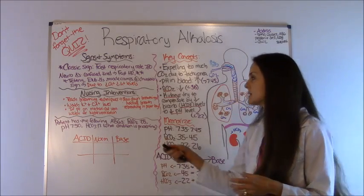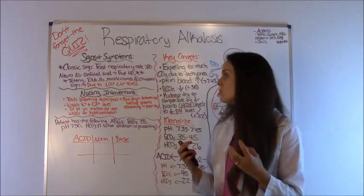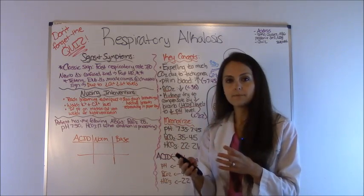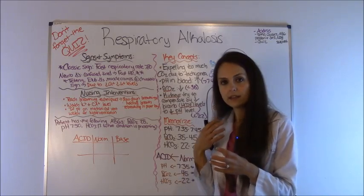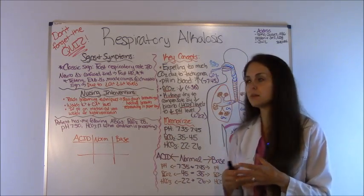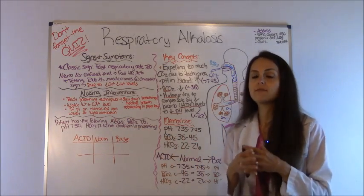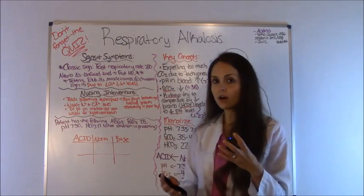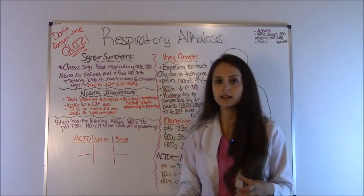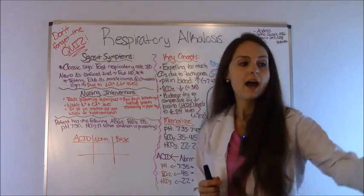For nursing interventions, you want to teach the patient breathing techniques — if they're having an anxiety attack, have them slow their breathing down, hold their breath, or rebreathe into a paper bag. This helps them re-inhale the CO2 they're blowing off to get those levels back up. Watch the potassium and calcium levels and monitor for signs and symptoms of low potassium and calcium. Also, if the patient is on mechanical ventilation — remember that's a cause of respiratory alkalosis — make sure the settings are appropriate and not hyperventilating the patient.